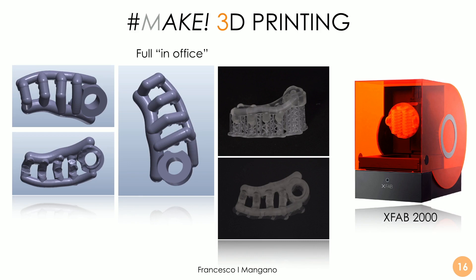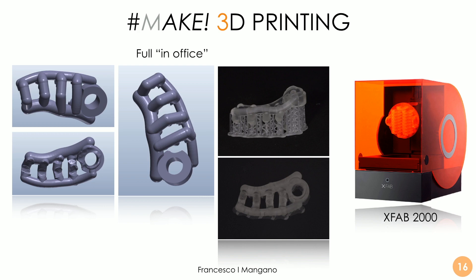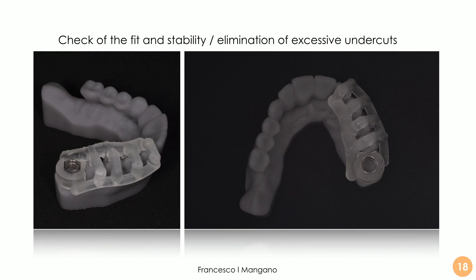Here once again the XFAB 2000 from DWS Systems — a very good company for 3D printers, an Italian company located in Veneto. This is the guide printed in DS3000 resin, and this is the model — everything is full in-office. In this case it was printed with the Invicta 917 resin with the same machine. It's a very important step that can take some time: to check the fit and stability of the guide on the model before going to surgery, because there may be excessive undercuts that need to be eliminated in order to insert the guide smoothly with the best stability and adaptation, because otherwise clinically we may have problems during insertion of the guide.